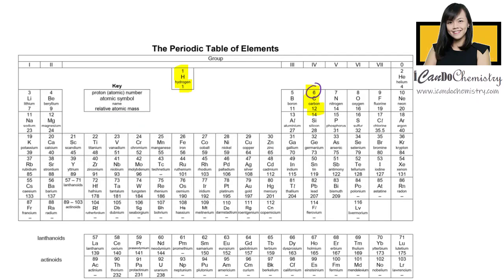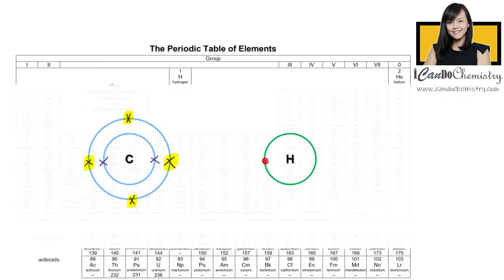This is hydrogen in the periodic table. It has only one electron in its first shell. It needs one more electron to achieve stable noble gas duplet electronic configuration.